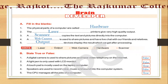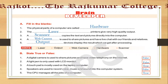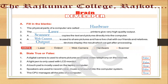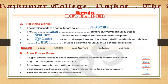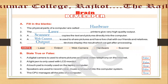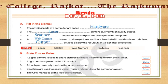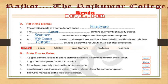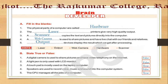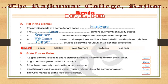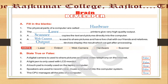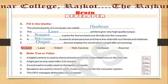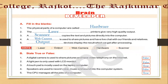As we explained in previous videos, whatever parts we can touch are all known as hardware — like monitor, CPU, keyboard, mouse, speaker. These are all devices we can touch and move, so they are physical parts and that's why they are known as hardware. Then the second one: blank printers give very high quality output. The answer is laser printer, as I just mentioned that with a laser printer we get better quality output.